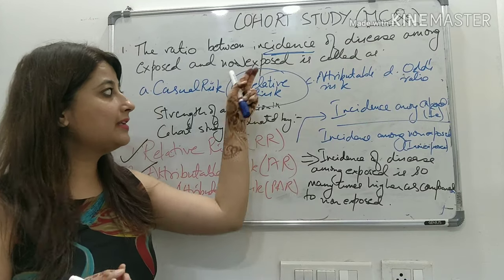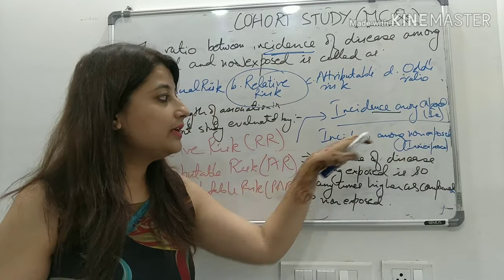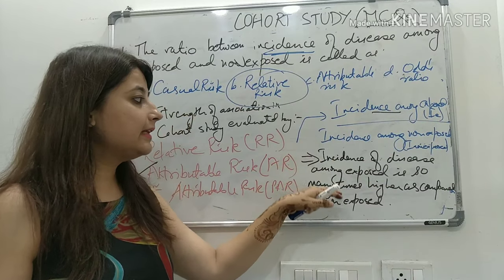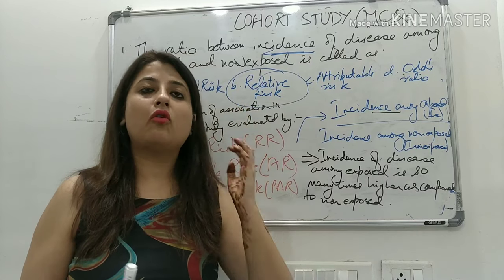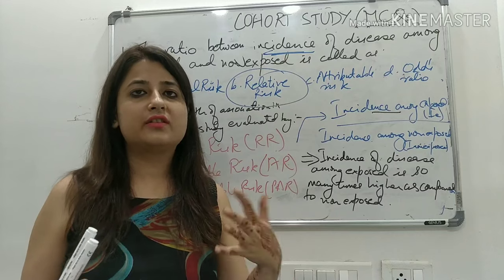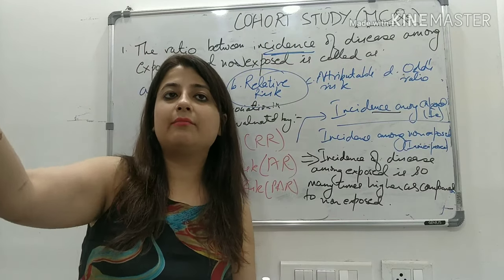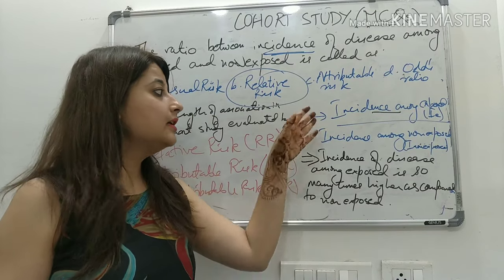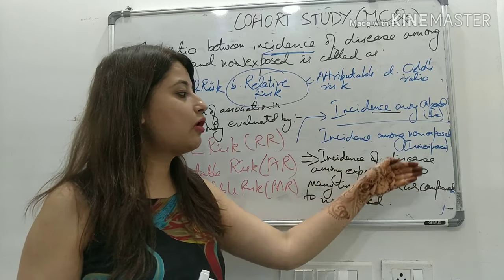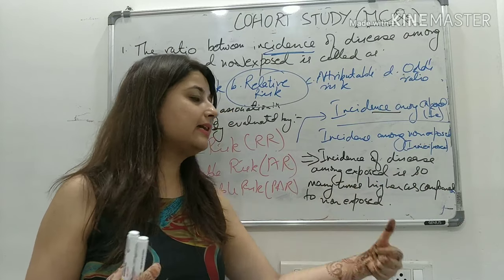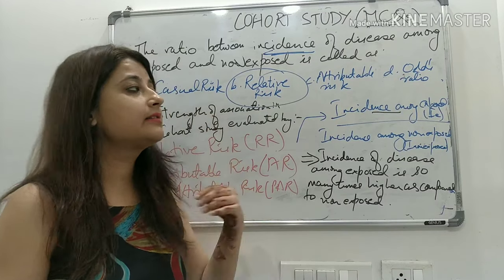The first and most important measure is relative risk. It is the incidence of disease among exposed (Ie) divided by incidence among non-exposed (Ine). For example, suppose we have a cohort of first-year college students divided into smokers and non-smokers, followed up for 10 years. If relative risk comes out to be 2, that means the incidence of lung cancer among those who smoked was two times higher compared to those who did not smoke.